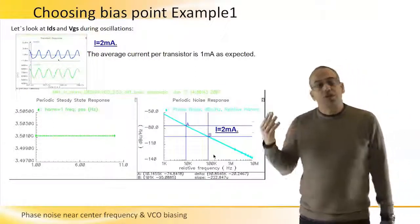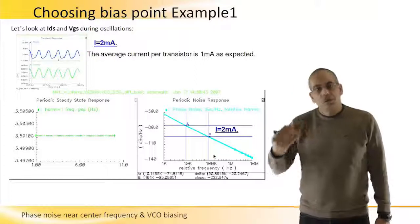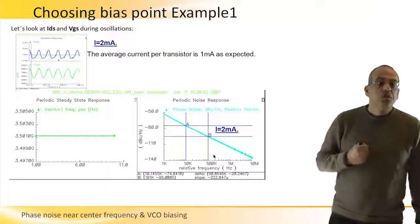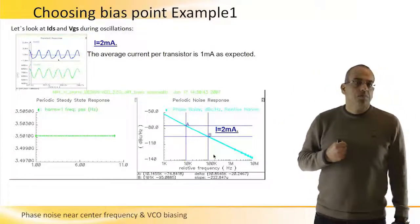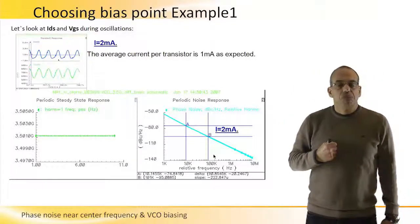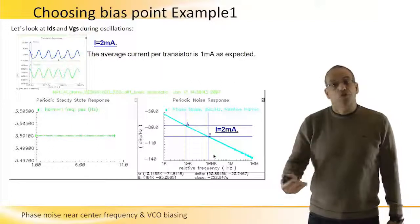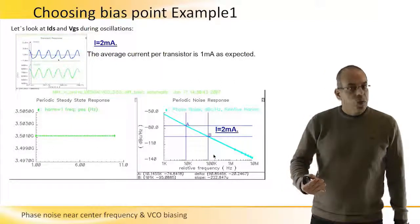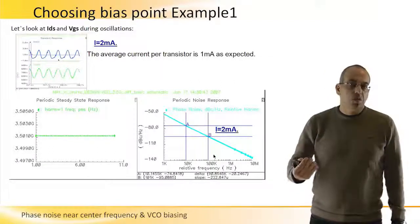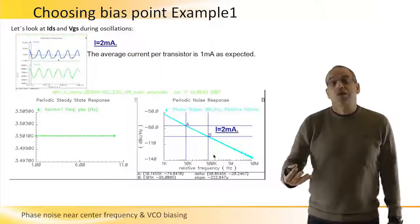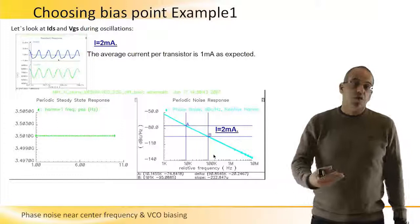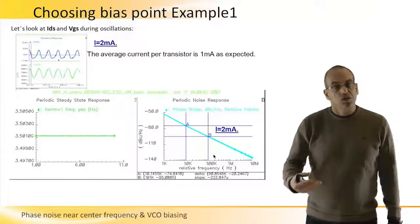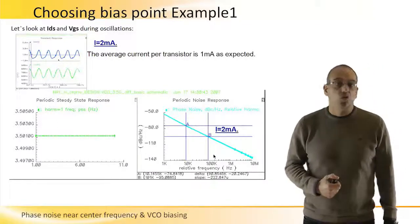The absolute values of -74 dBc/Hz at 10 kHz offset and -94 dBc/Hz at 100 kHz offset may not be good enough for some applications. Some systems will need better phase noise performance. We already know that we can increase the current, and that is what we will do in the next slides.